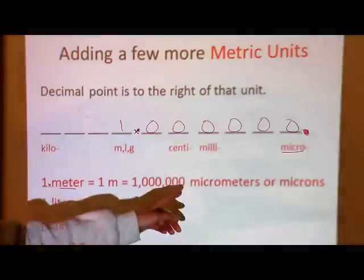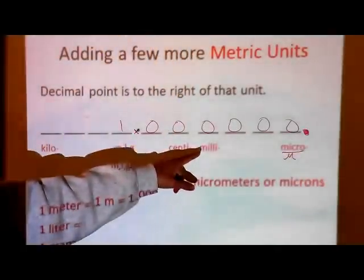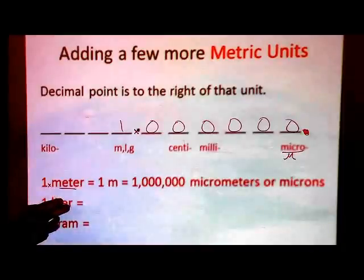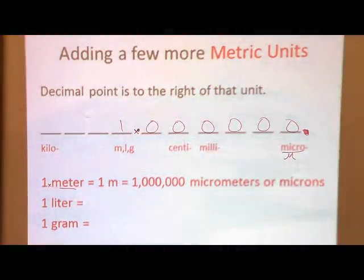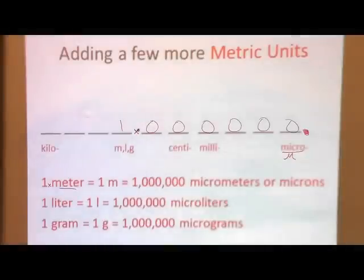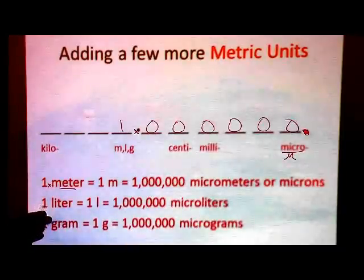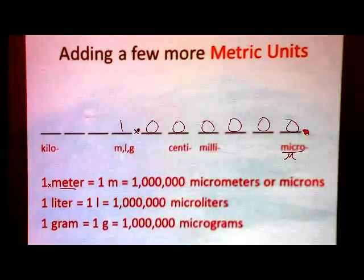The abbreviation for micro is the Greek letter mu — it looks like a curly M versus a regular M for milli. When you see that Greek letter mu, think micrometers. I want you to pause the tape and try converting liters and grams into microliters and micrograms using the six steps. Hopefully you came up with a million microliters and a million micrograms. This is the end of the basic instructions — go ahead and do some practice problems to see if you really understand metric-to-metric conversion. Good luck.